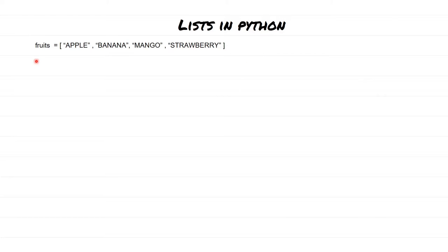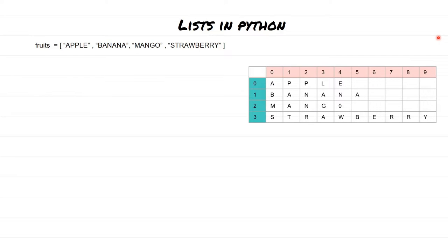If you do type() on the fruits variable, Python is going to return that fruits is a class of type list. Once you define this variable, this is how it looks logically. It is more like a multidimensional array. All of the different fruit names are going to be indexed: at position 0 you have apple, position 1 is banana, position 2 is mango, and position 3 is strawberry.